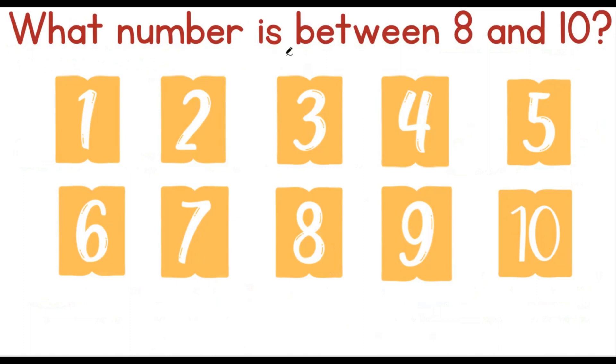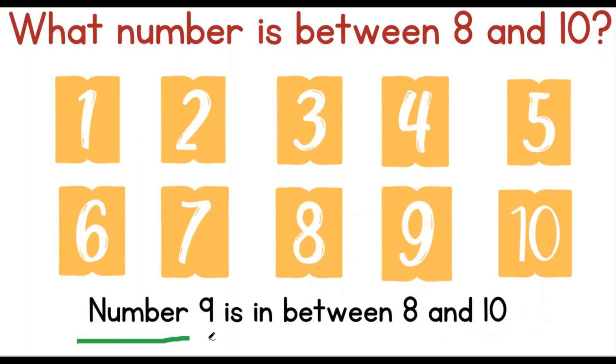What number is between 8 and 10? This means what number comes after 8 and before 10? That number is number 9. Number 9 is between 8 and 10.